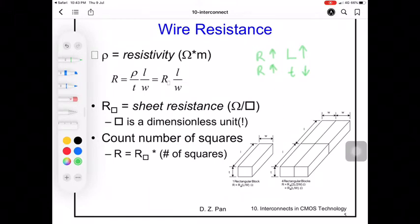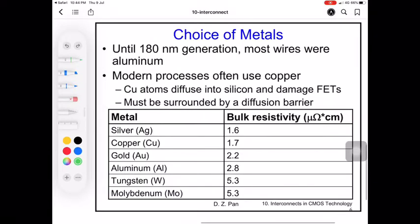There is something known as sheet resistance, which is rho over T. This is known as sheet resistance or ohms per square - a dimensionless unit. If you have the sheet resistance, you can multiply it by the number of squares. You can divide a long metal wire into different squares. For example, if there are four blocks, the resistance is just the number of squares multiplied by the resistivity.